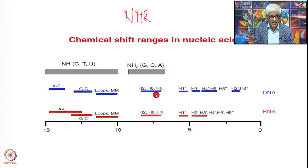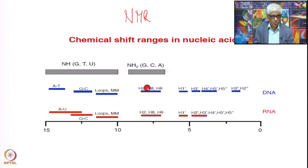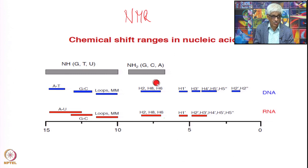Then there are the base protons H2, H8, and H6. H2 and H8 are present in both G and A, and H6 is present in C. These nomenclatures are important — one has to remember them.